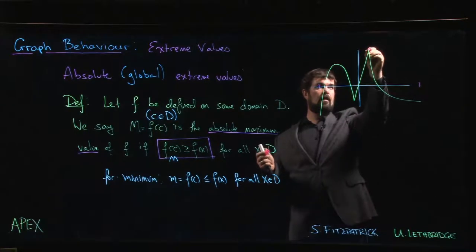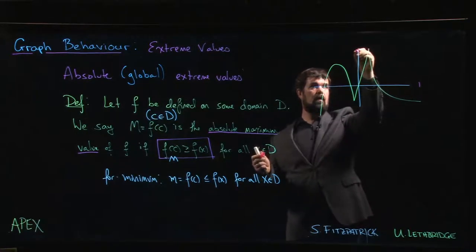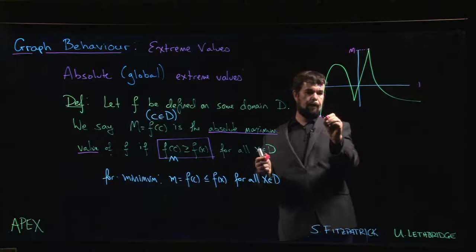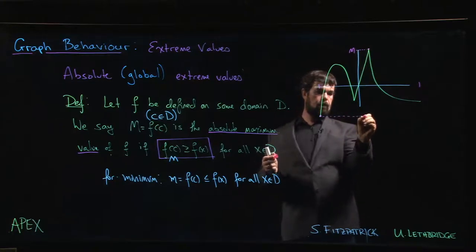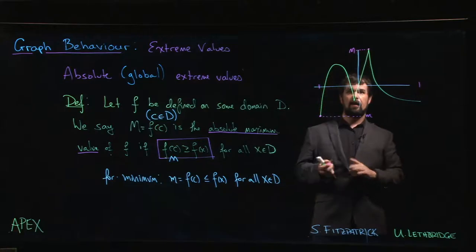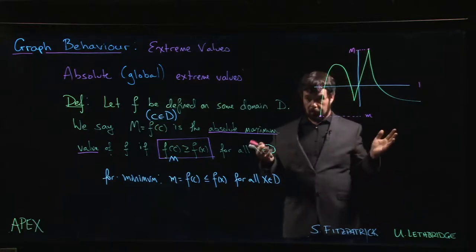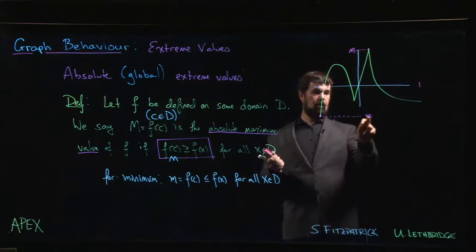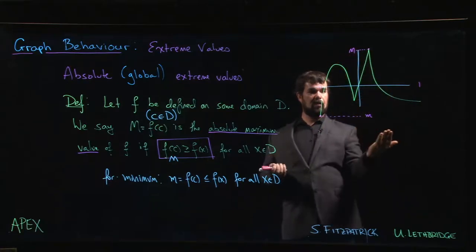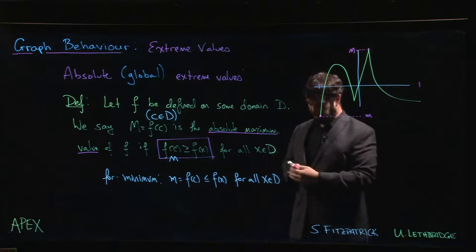We say, okay, so the biggest we get is up here. There's our m. What's the smallest? It's down here. There's our little m. And each one does occur for some x value that's in the domain. Big, little m, big m, these are y values, but they come from plugging x values into the function. They're the outputs for a given input.